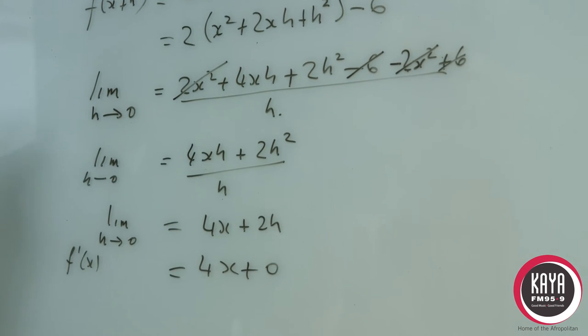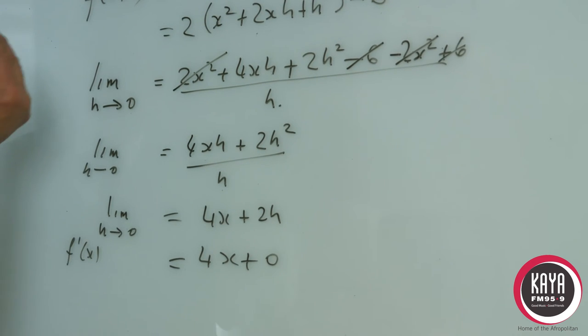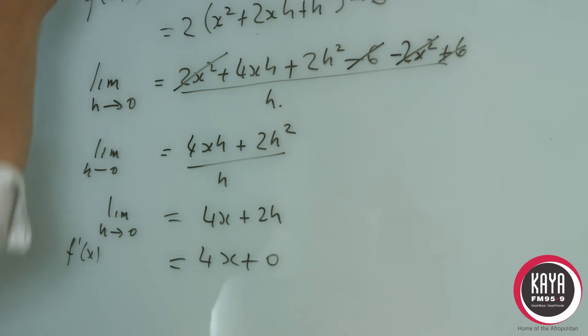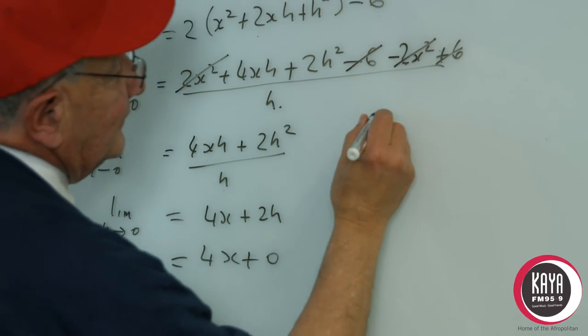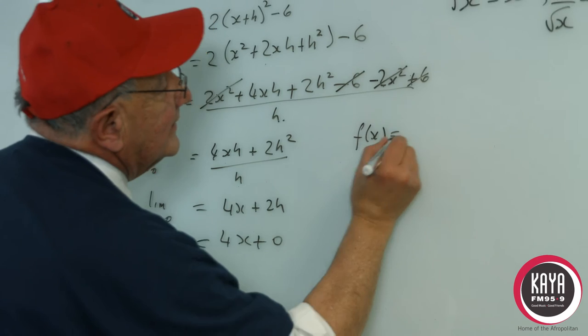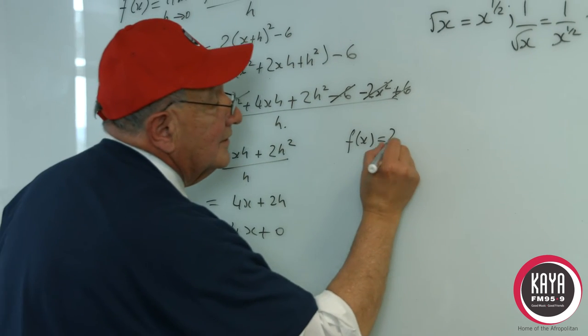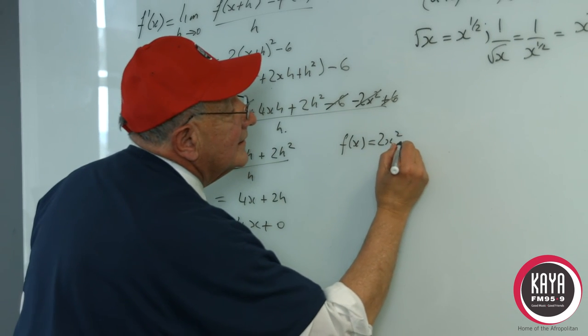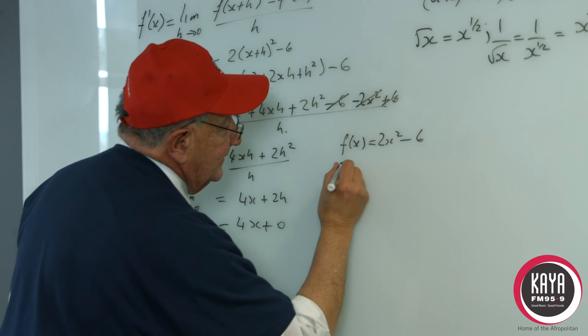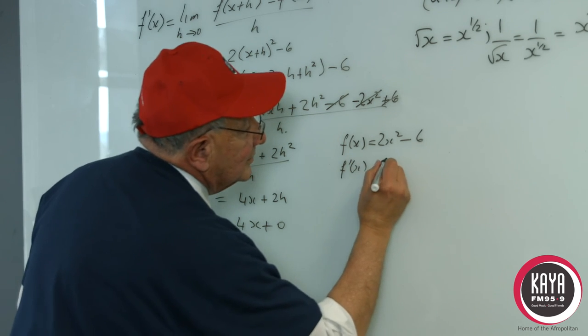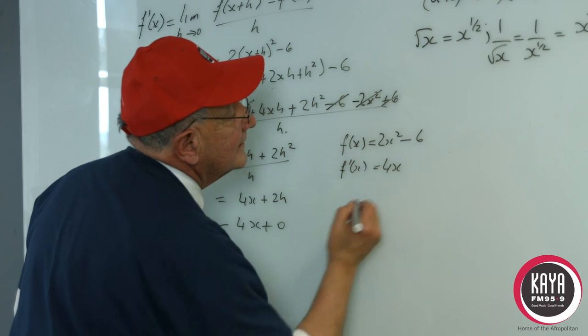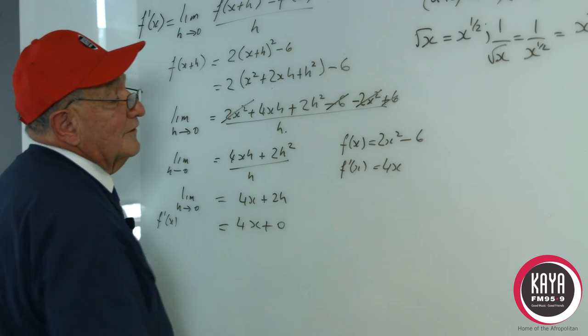And I also like to show you how to cross check the answer. So if we're doing it straightforwardly without first principles we have f(x) is equal to 2x² - 6. And f'(x) will equal 4x.